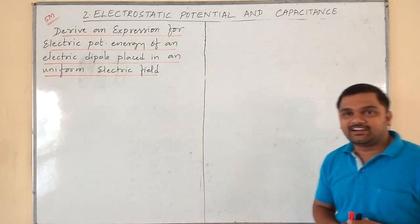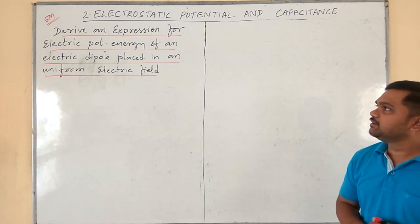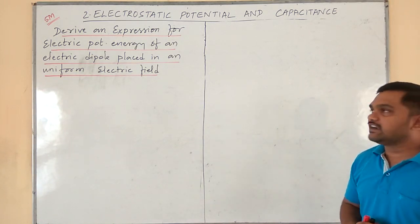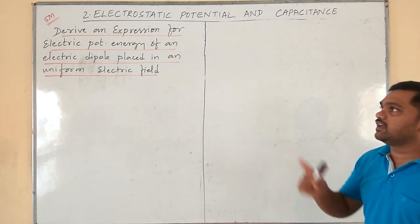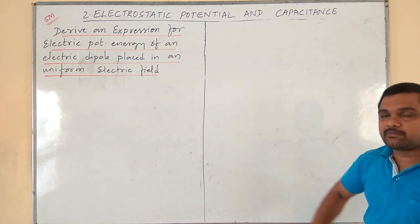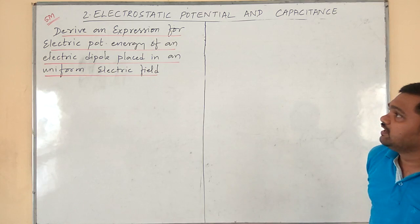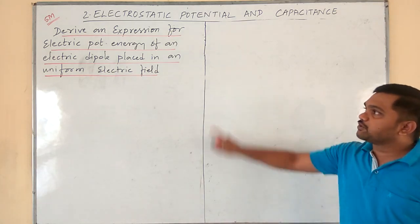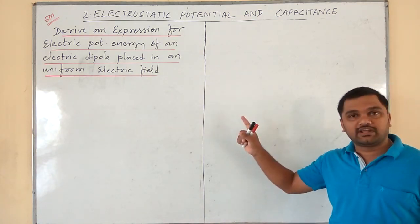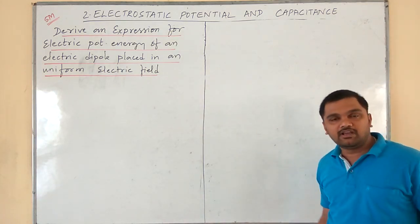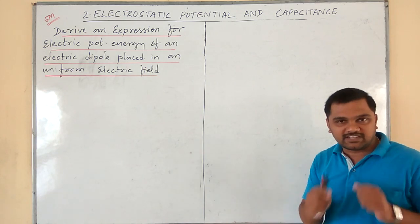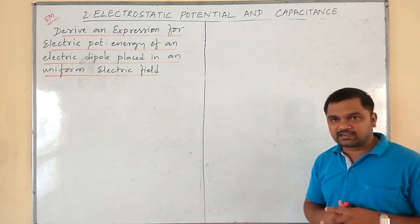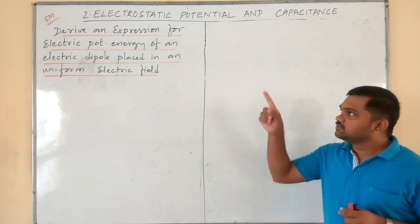Welcome back to my channel, dear students. In this class, let us discuss an important five-mark derivation: the derivation for electric potential energy of an electric dipole placed in a uniform electric field.